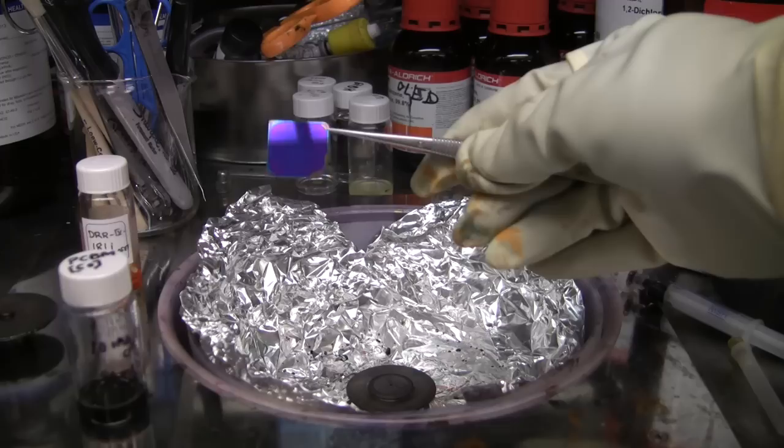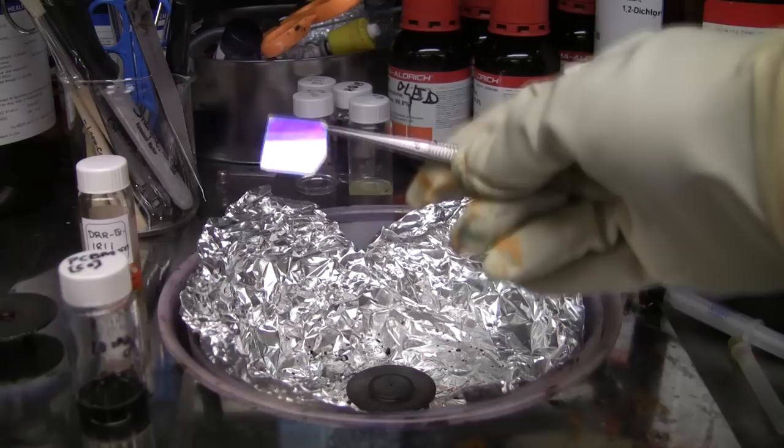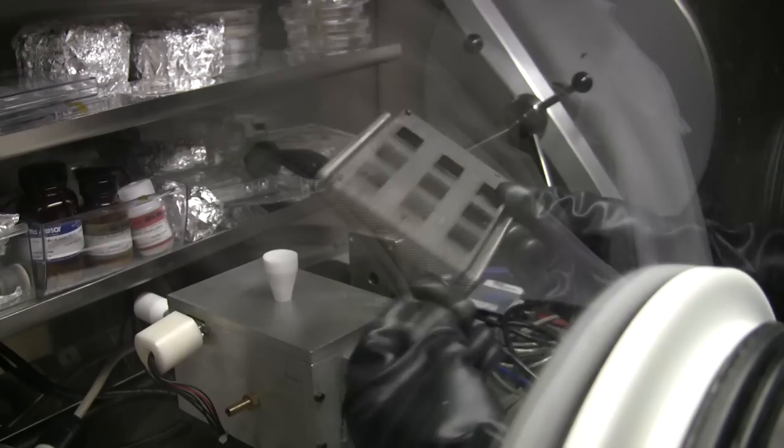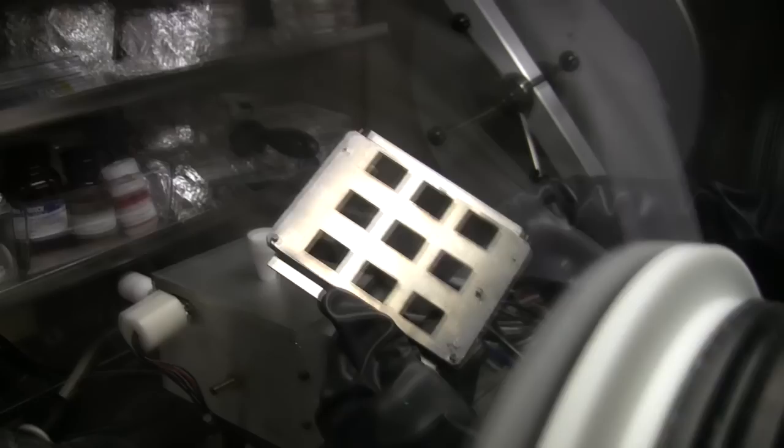So we will transfer these substrates through our antechamber to the next nitrogen glove box. After we have finished the spin coating procedure we have to transfer the samples to the next glove box. So this is the chamber where we put the substrates from the other side, and then we transfer these substrates. And then we close back this transfer chamber.